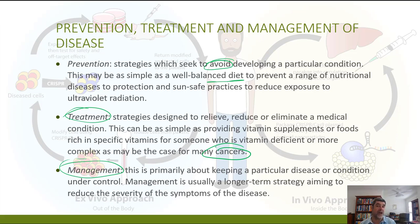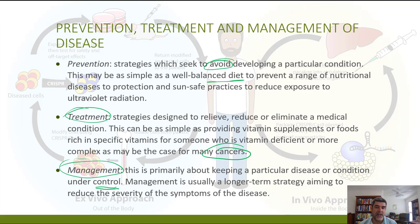Cancers, for example, come in a range of different forms. Some are operable and there may be a high success rate in surgical removal of a tumour. Other times, particularly if the tumour is found to be malignant, surgery may not be the only treatment required. This tends to lead us towards management, which is about control — an implication that we're going to be dealing with this disease for some time. Cancers often move from the treatment phase into the management phase, and it can be difficult to find the exact boundary between where one ends and the other starts.